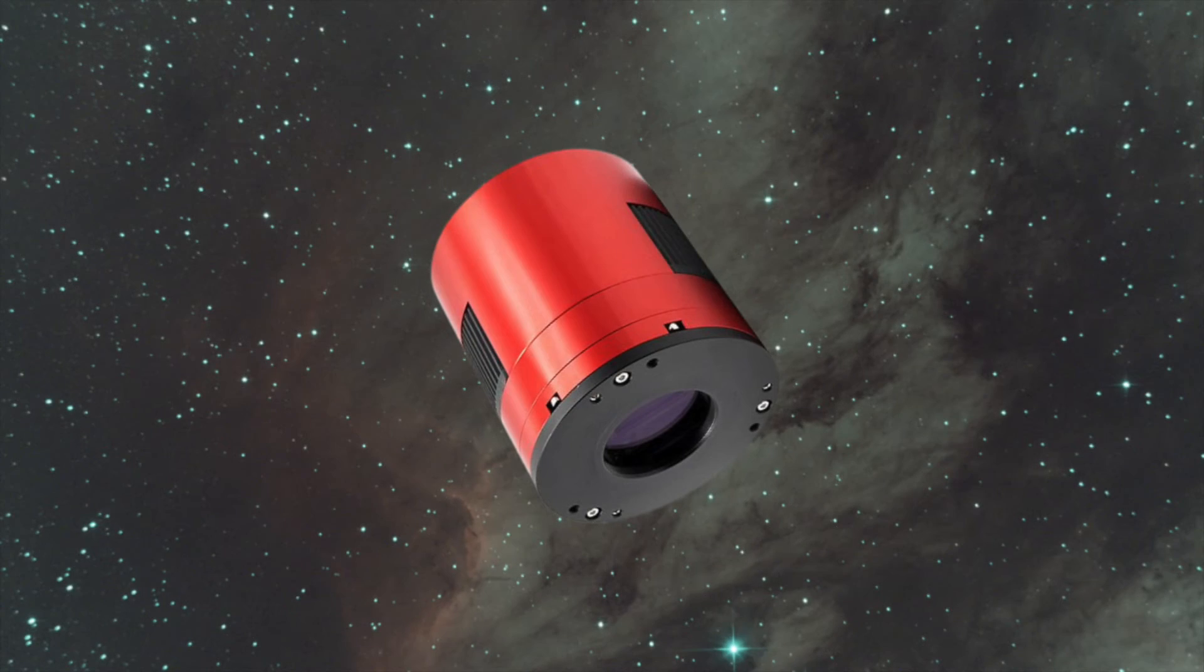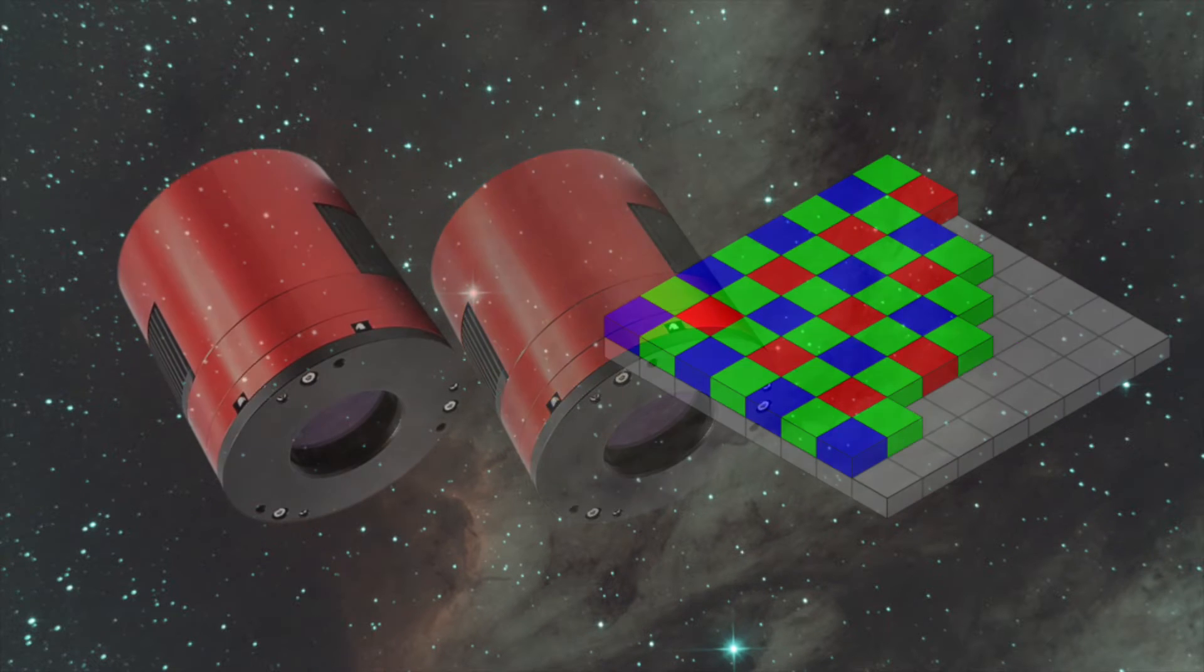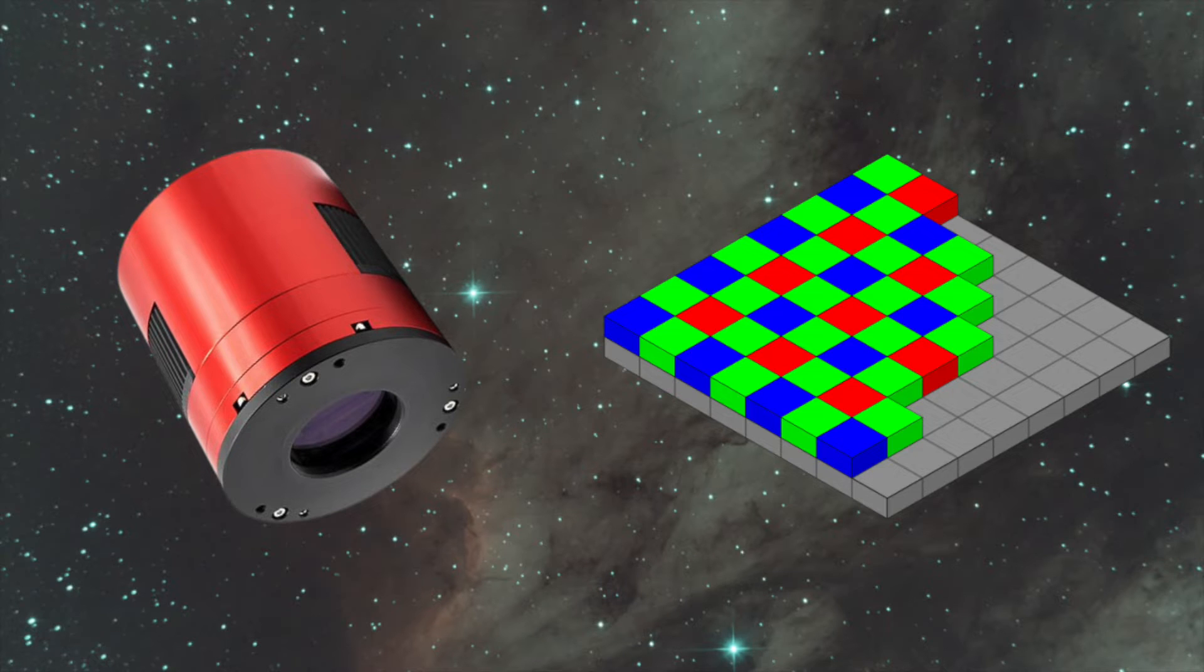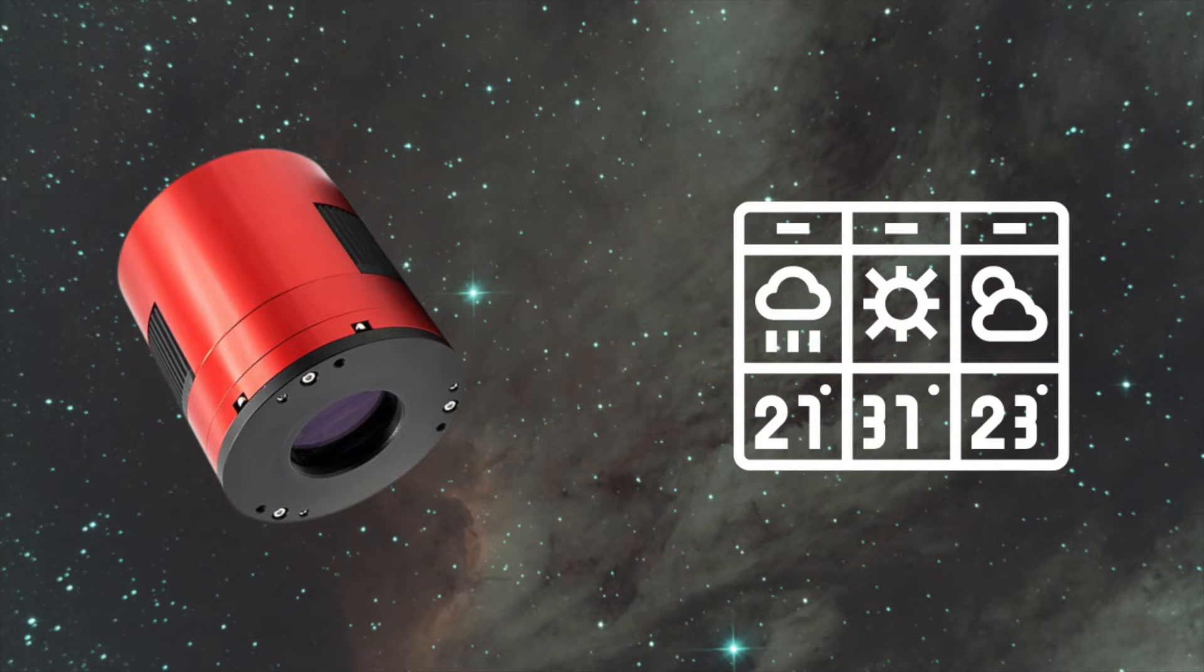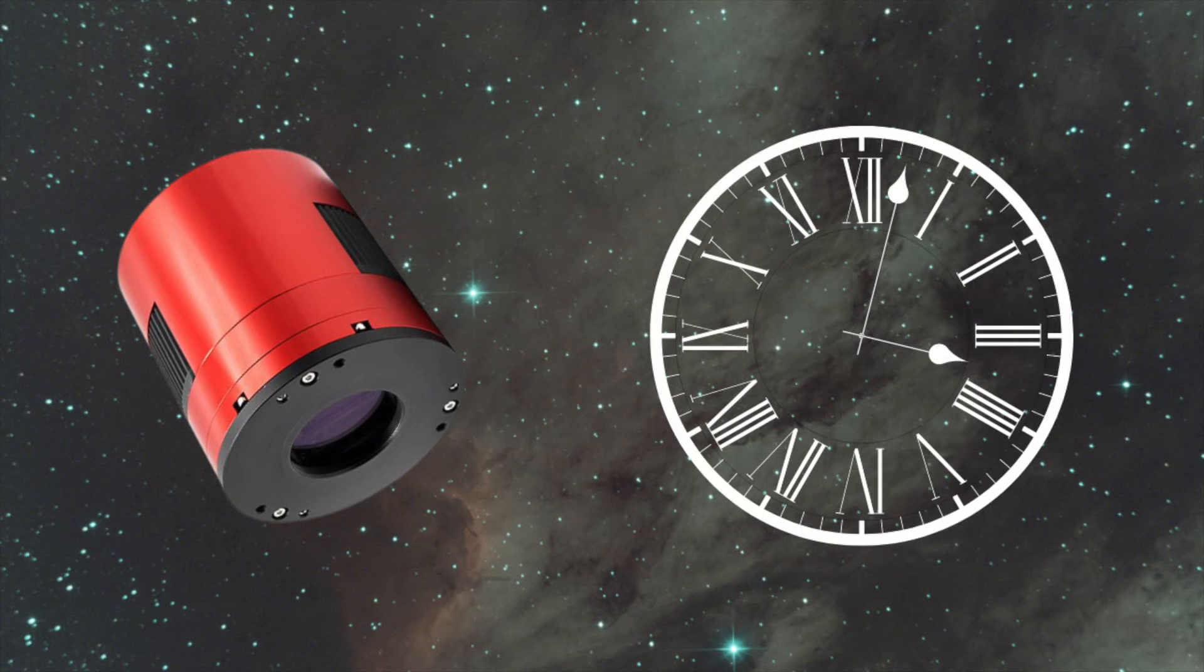One-shot color cameras are generally easier to use and faster to set up. Each exposure you take captures all of the color data without needing to switch between different filters for each color you want, which can save you a lot of time, especially if you're working under changing weather conditions or have limited time under the stars. This is especially true if you want to just be able to set up and capture a full image in just a few hours.